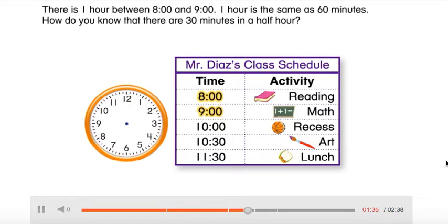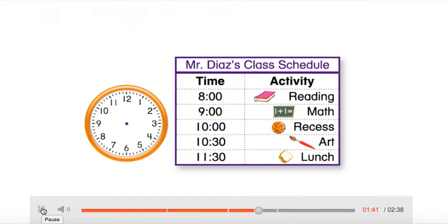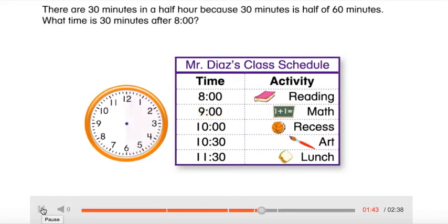How do you know that there are 30 minutes in a half hour? There are 30 minutes in a half hour because 30 minutes is half of 60 minutes.